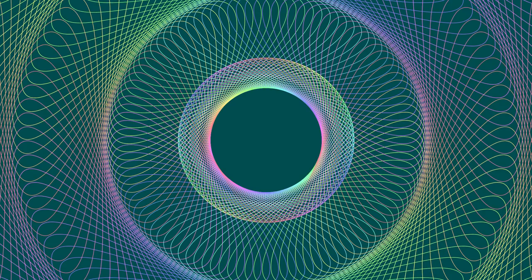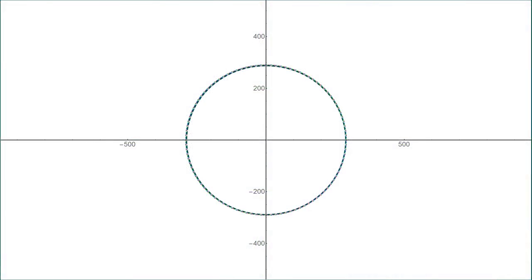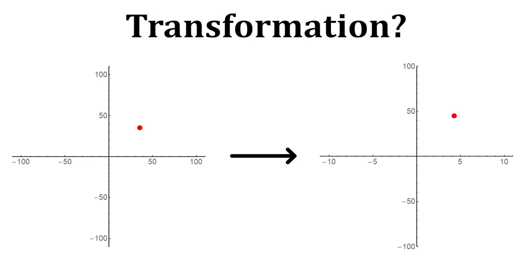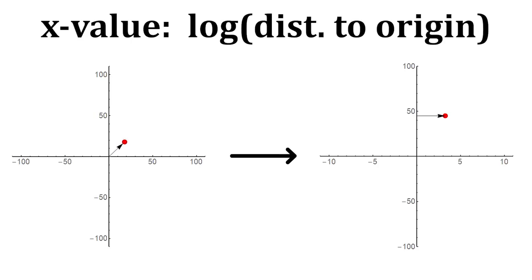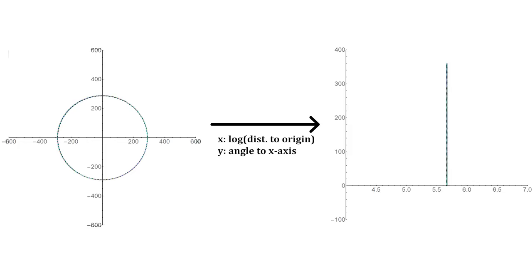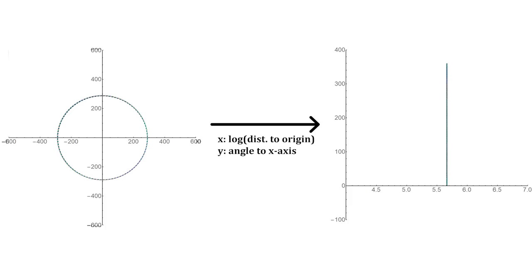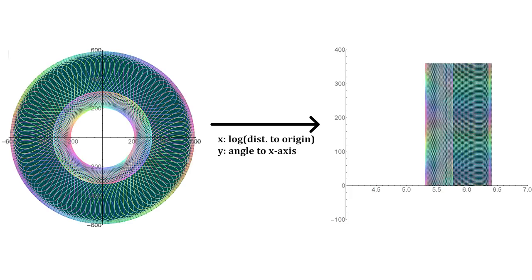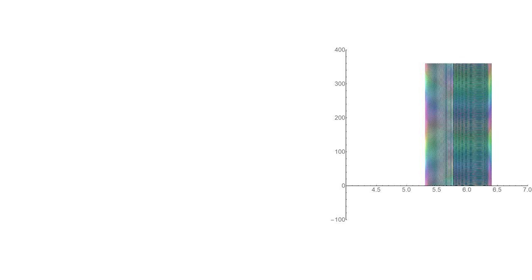It turns out the idea is really not that complicated, so I'm going to give you a simple explanation and then use it on some gears. Start with some picture. We need to transform this picture — to make things easier, let's focus on what the transformation does to the pixels in a circle centered at the origin. The transformation sends every point to a new point where the y-value is the angle that the point makes with the origin and the x-axis, and the x-value is the log of the distance to the origin. Notice that it will send this circle to a vertical line segment.